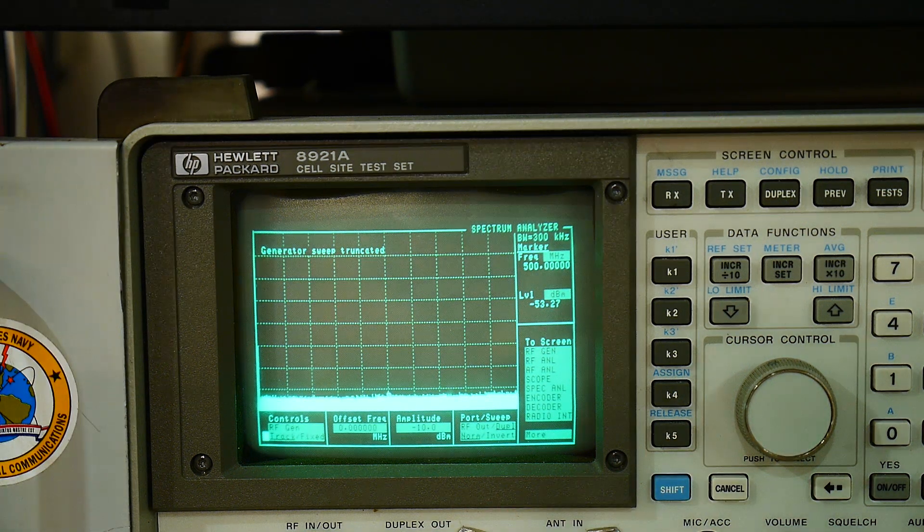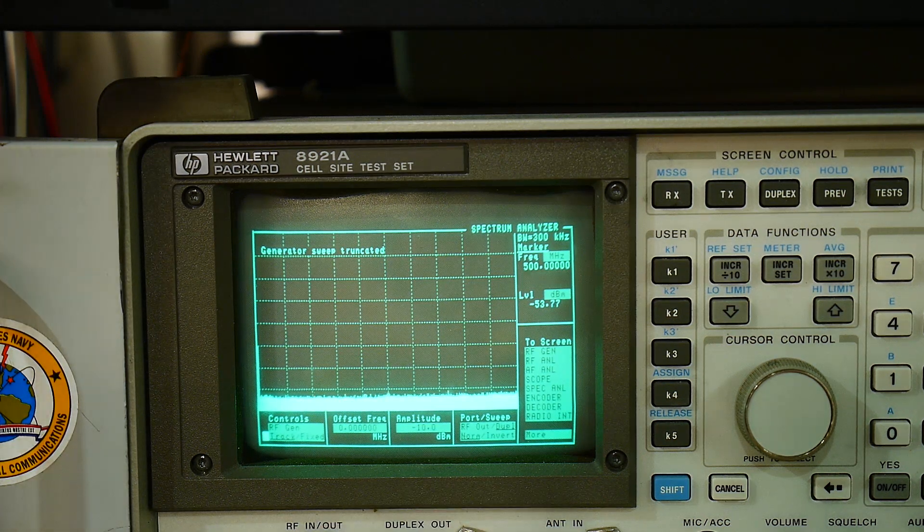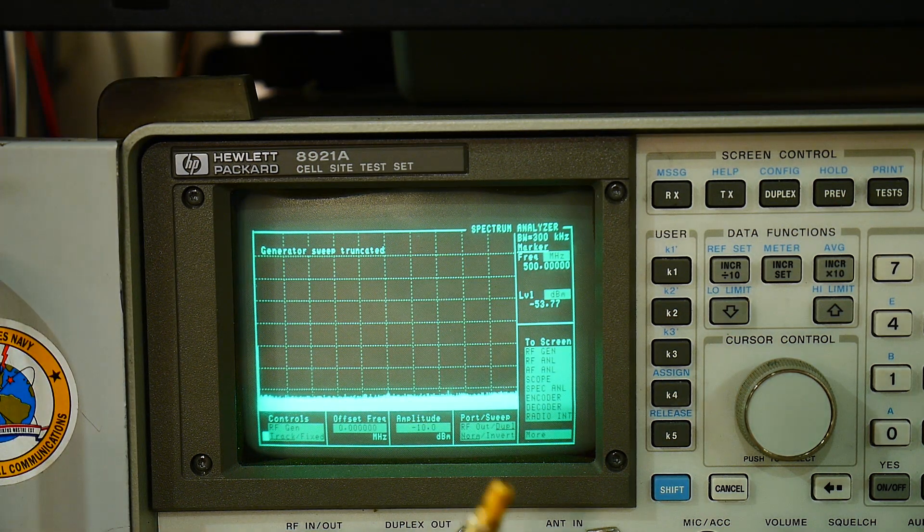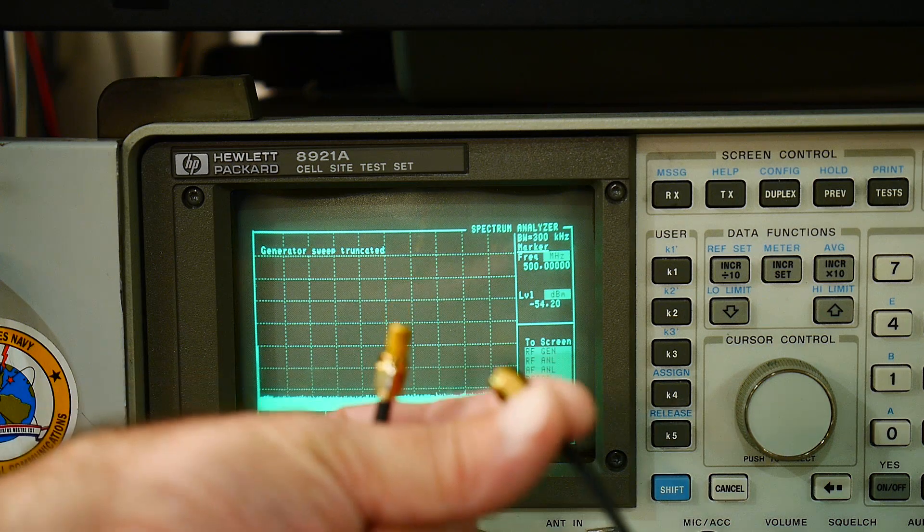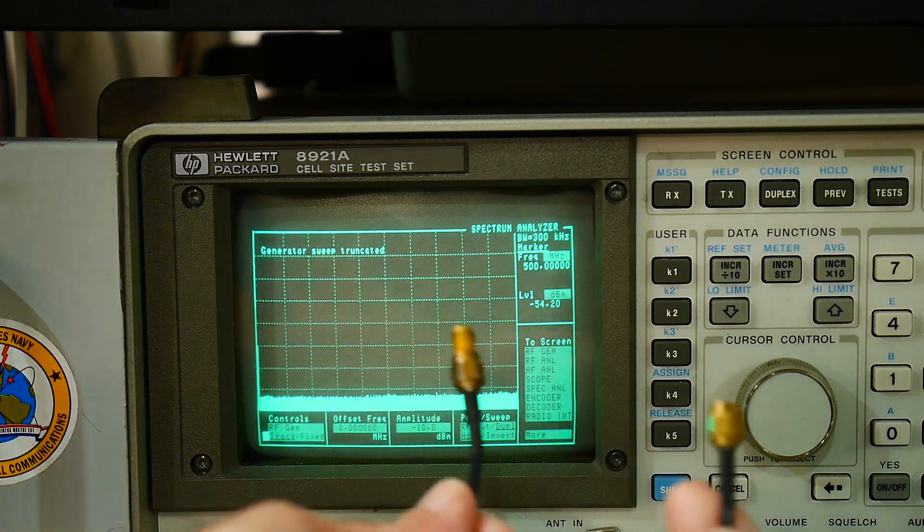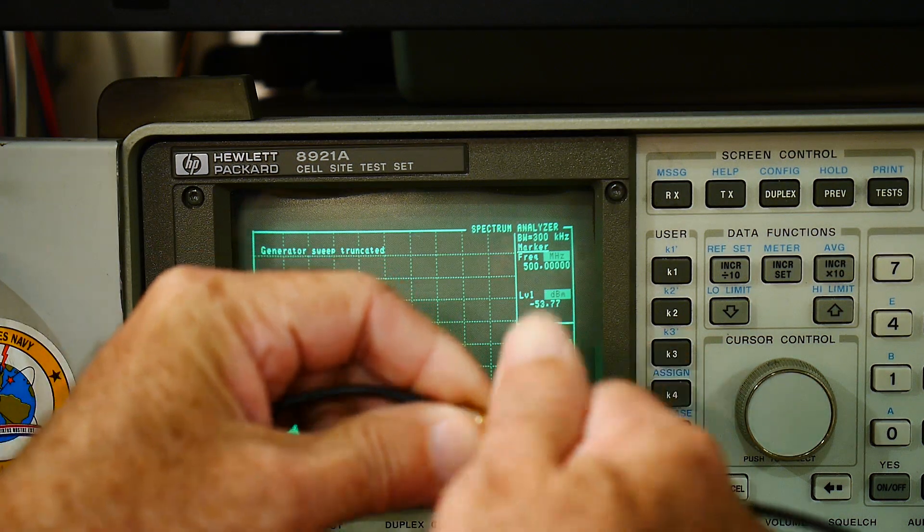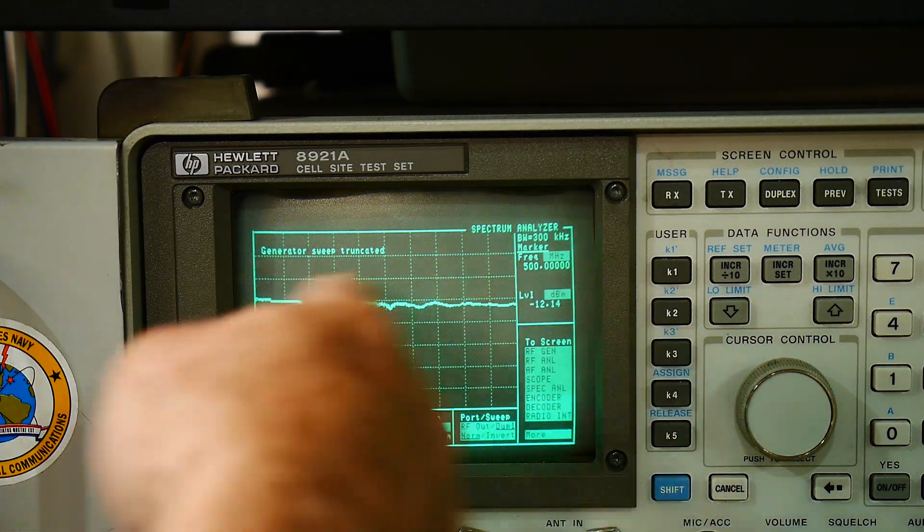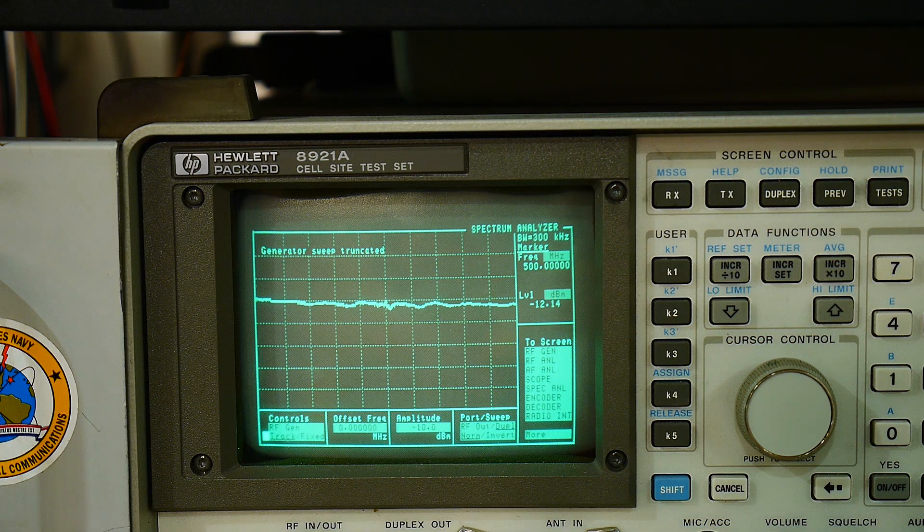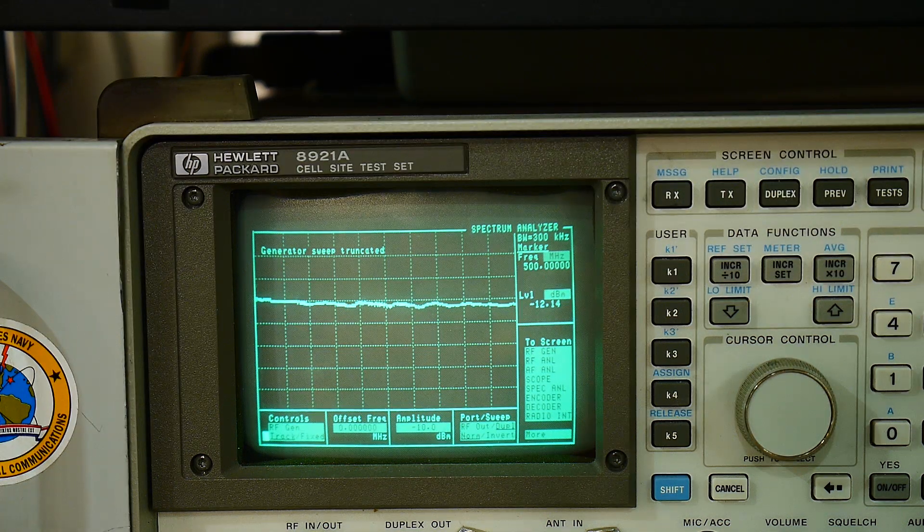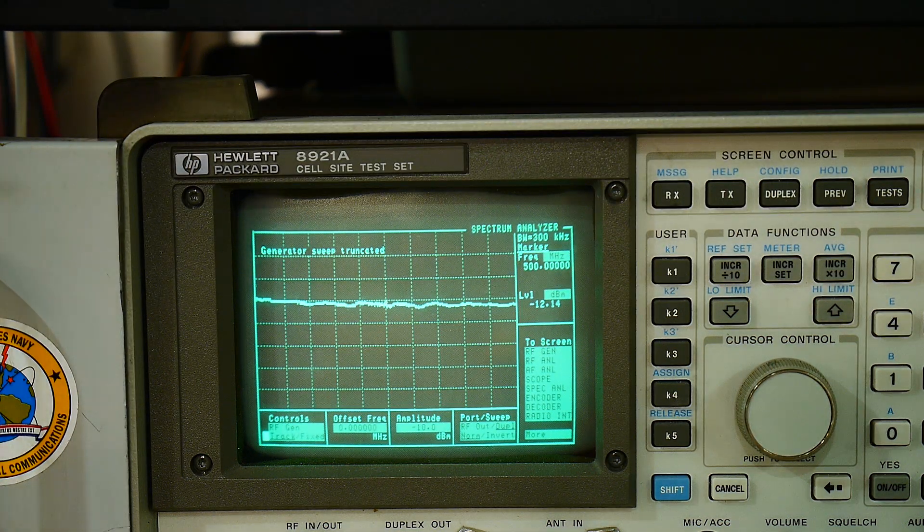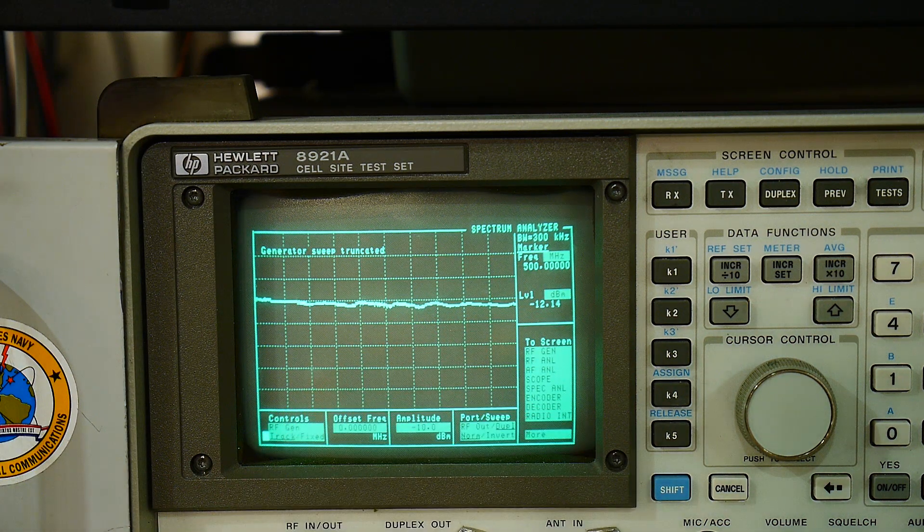I think it should be going now. So we'll take our two cables and hook them directly. We're going to short out the machine and see if we get a... there we go. So it is measuring about minus 12 dBm. That sounds about right.